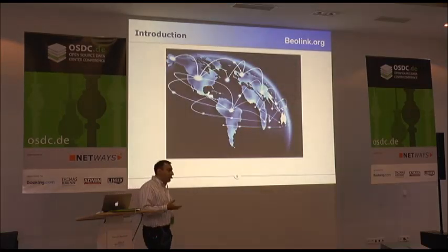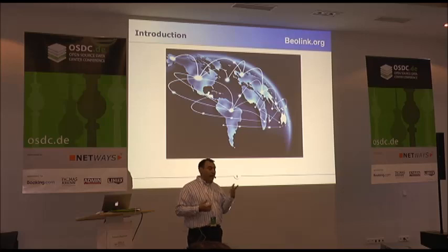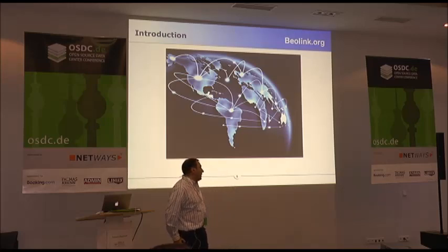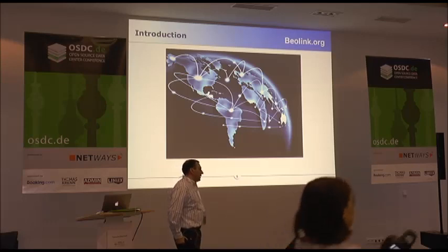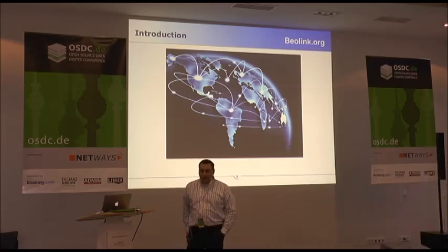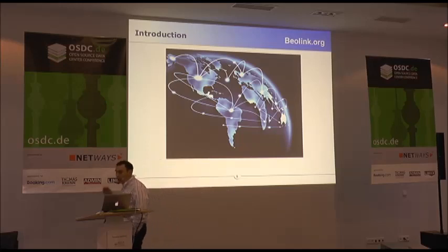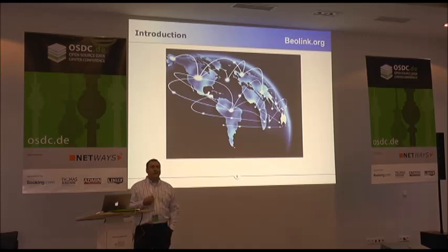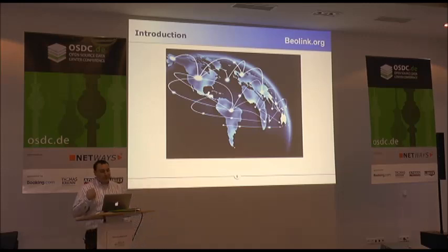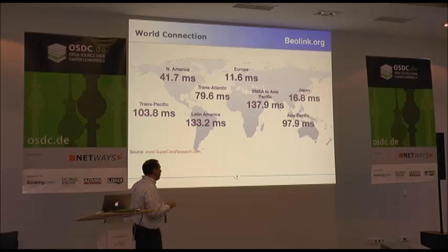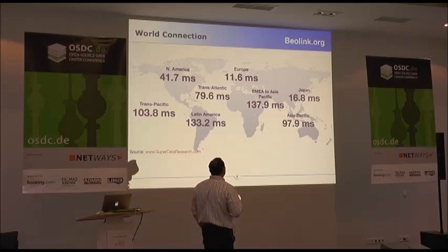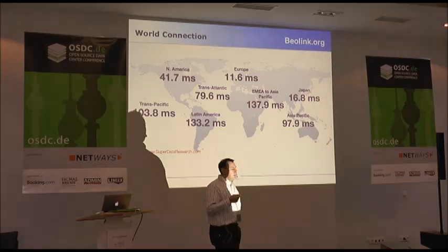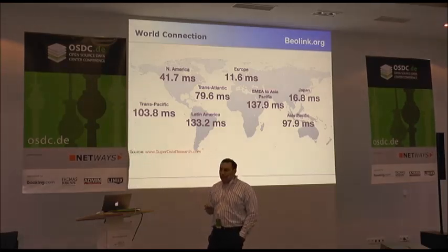Today you can have data centers everywhere. You can buy a VM at quite a low price somewhere — for example on Amazon, you can have one VM in Sydney, one in Singapore, one in São Paulo or Santa Clara, and so on. The world is quite well connected with undersea cables and so on. But probably not many people know that you need at least 200 milliseconds between Sydney and Santa Clara, or 250 milliseconds from London to Singapore.